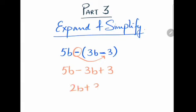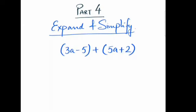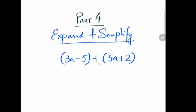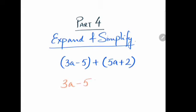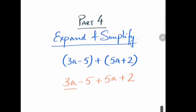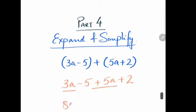Part 4: here we have two brackets with a plus sign in between. What we have to do is open the bracket, so it will be 3a minus 5 plus 5a plus 2.